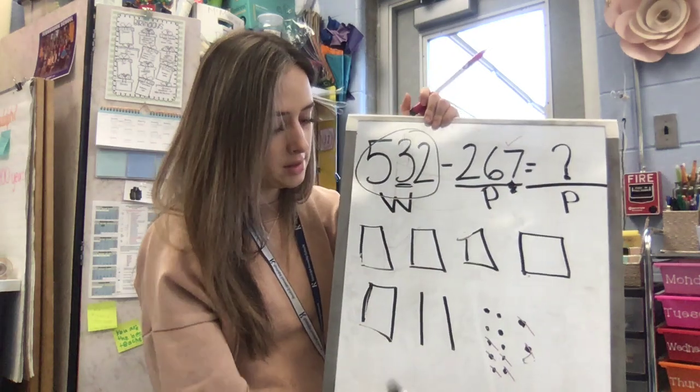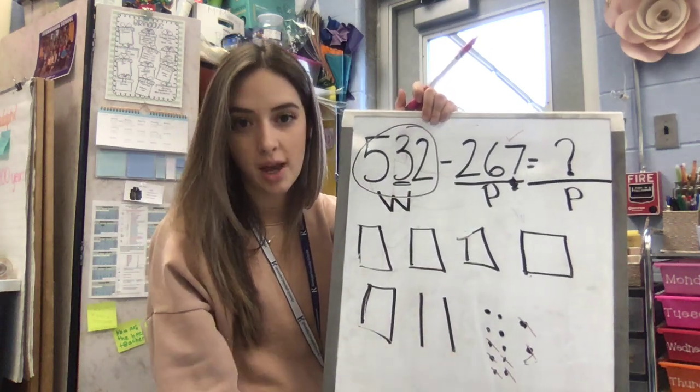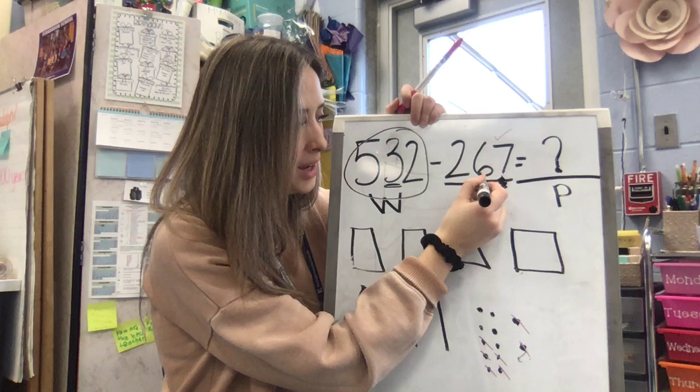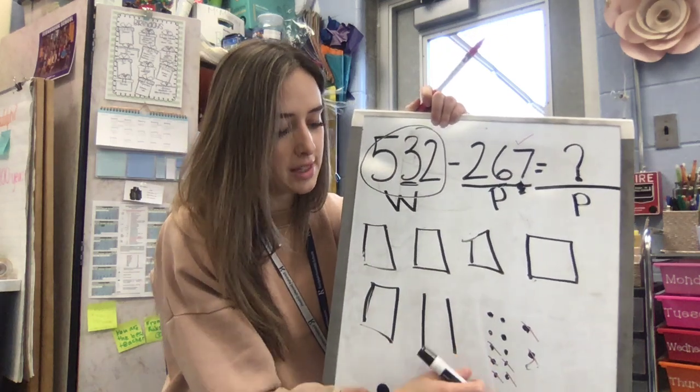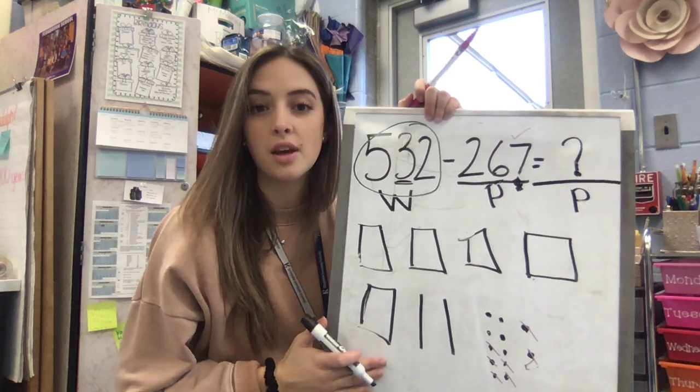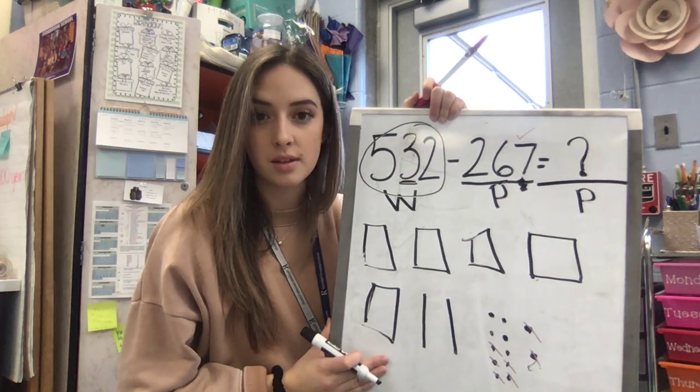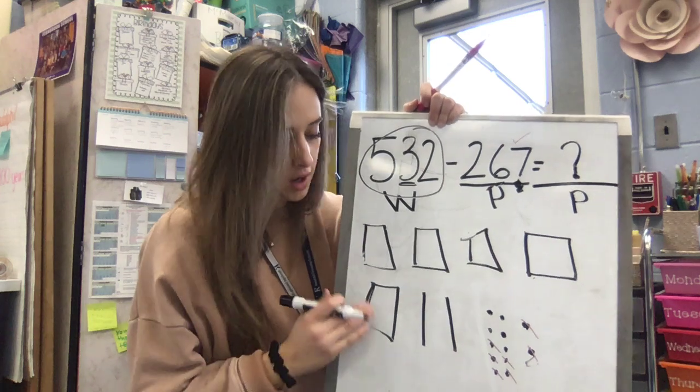Now I need to do my tens. I only see two tens, though. Can I take away 6 of them? Just like I did with my tens and ones, I could do with 100. How many tens are in 100? Good. 10 tens are in 100.